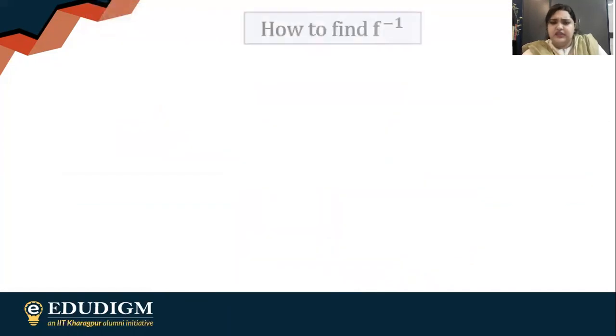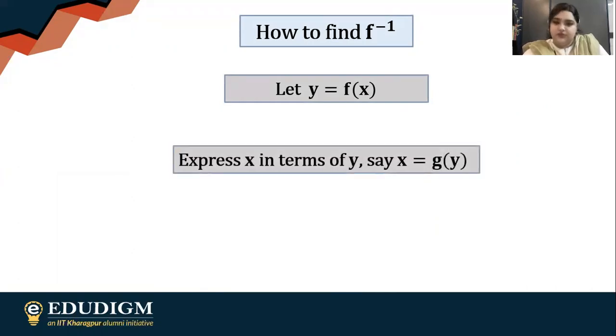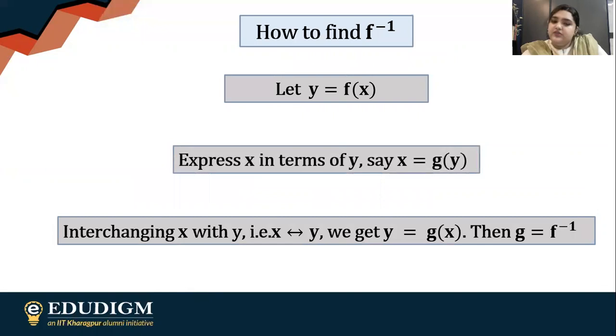Now that we understand the concept, next question is how do you find f inverse? Suppose you have y in terms of x, you find out x in terms of y. So suppose x equals a function of y, say g(y). What you do is you interchange x and y, and then if you get y equals g(x), you put g as f inverse.